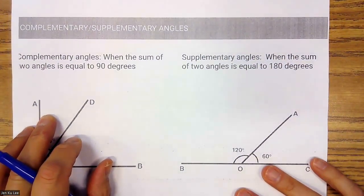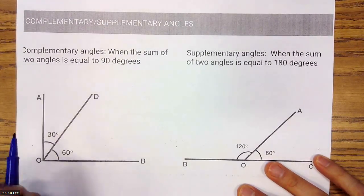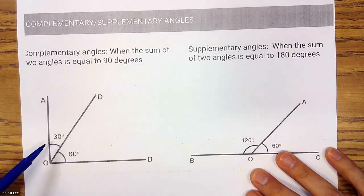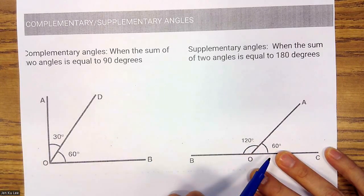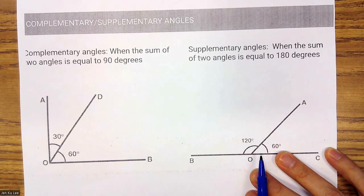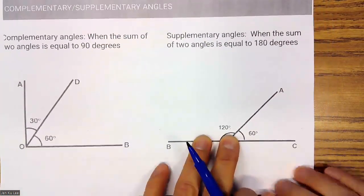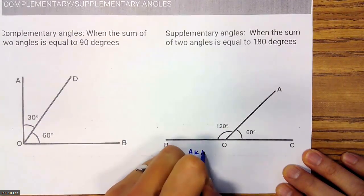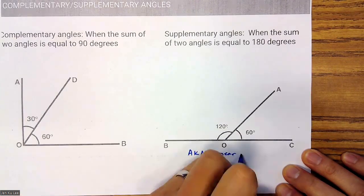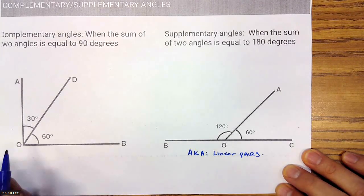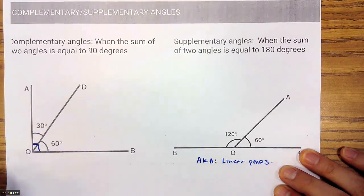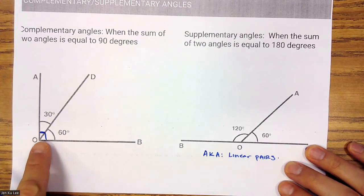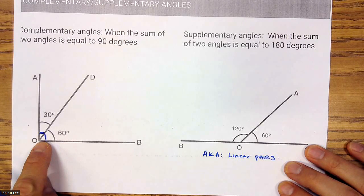The third and fourth relationships are complementary and supplementary angles. Complementary angles are when the sum of two angles equals 90 degrees. Supplementary angles are when the sum of two angles equals 180 degrees. These supplementary angles are also known as linear pairs.